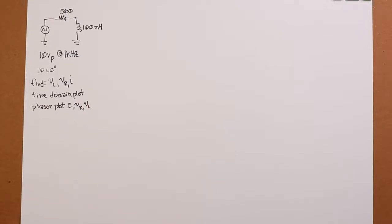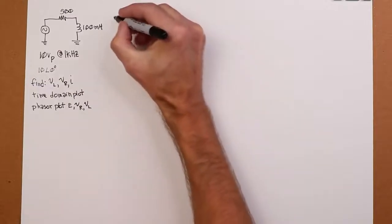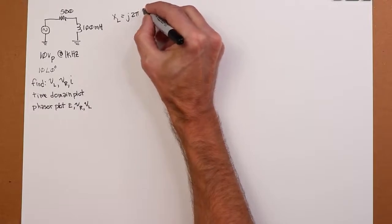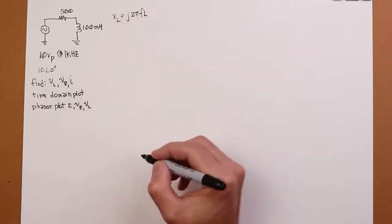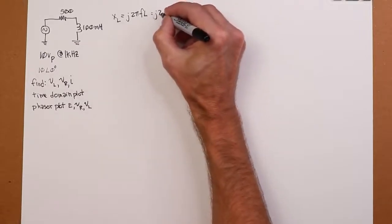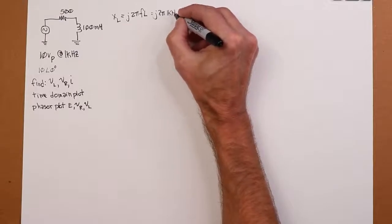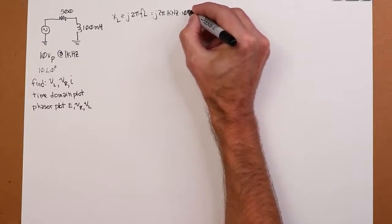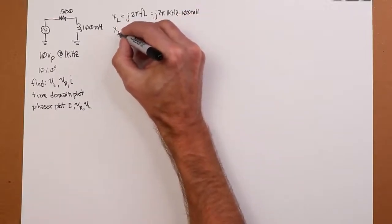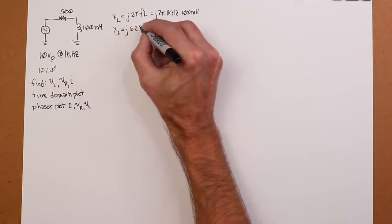All right, so the very first thing we have to do is figure out the value of the inductive reactance. And we know that XL is equal to J2πFL. So we can just plug the values in here. F is 1 kilohertz, L is 100 millihenries. So our Ks and millies wind up canceling out. And X of L is equal to J628 ohms.